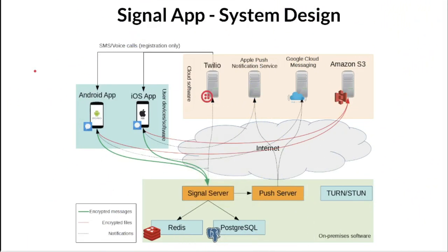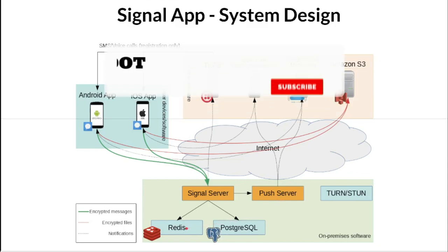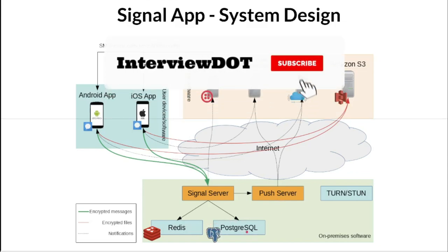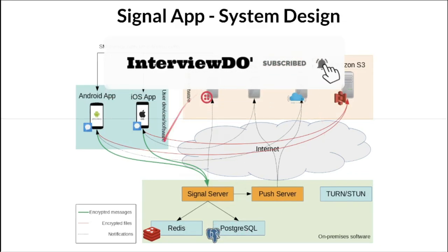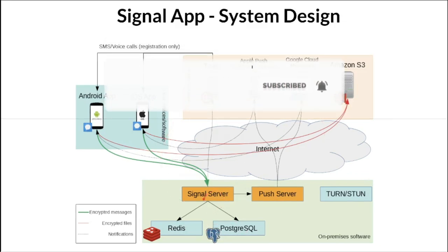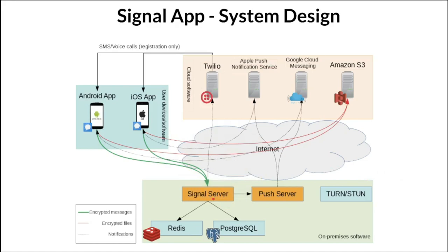Let's see the high-level system design for Signal. The key components are: Twilio, push notifications, Google Cloud Messaging, Amazon S3, the Signal server — which is the most important server for the entire product — a push server, Redis for cache, and PostgreSQL for the database.